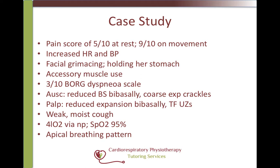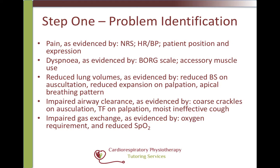So what problems have we identified? Our first step is to identify the impairments and how we know they exist. The patient is in pain — she has told us, she looks in pain, and she has an increased heart rate and blood pressure as a systemic response to a painful stimulus. Accessory muscle use and a Borg Dyspnea rating of 3 out of 10 indicate an element of dyspnea. Reduced breath sounds, reduced expansion, and an apical breathing pattern indicate reduced lung volumes. Coarse crackles, tactile fremitus, and a moist ineffective cough indicate impaired airway clearance. And the need for supplemental oxygen to maintain saturations above 95% demonstrates impaired gas exchange.